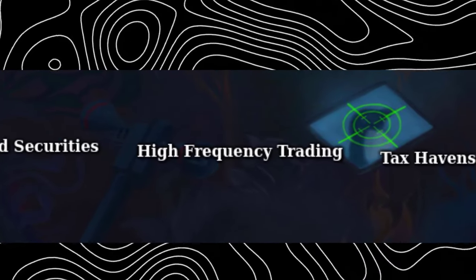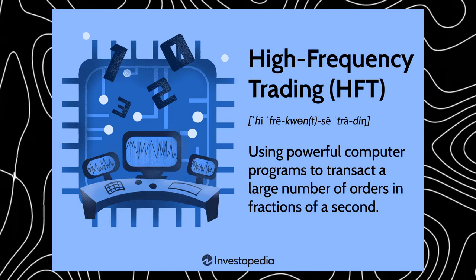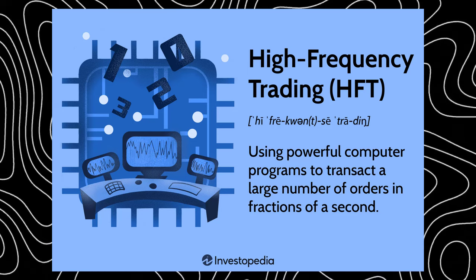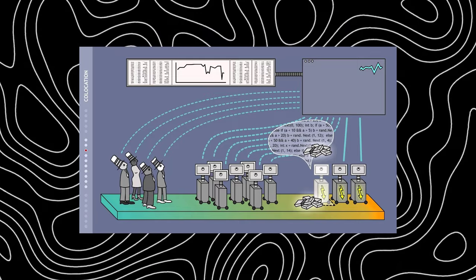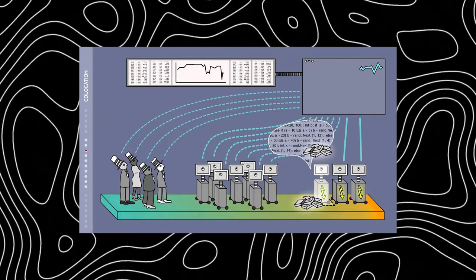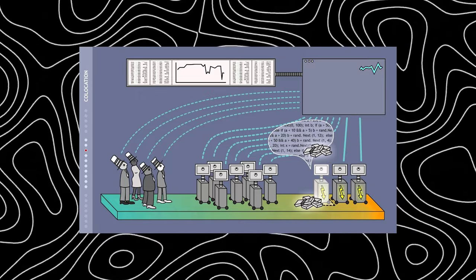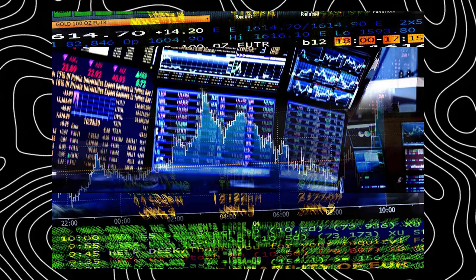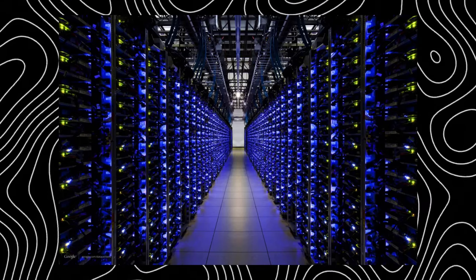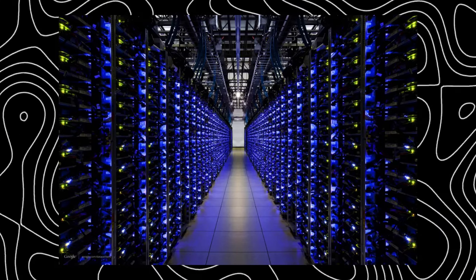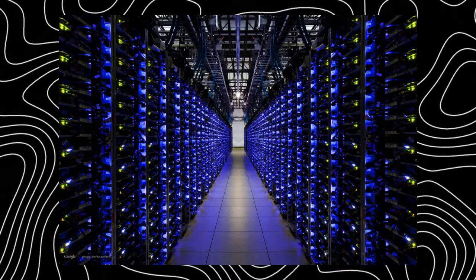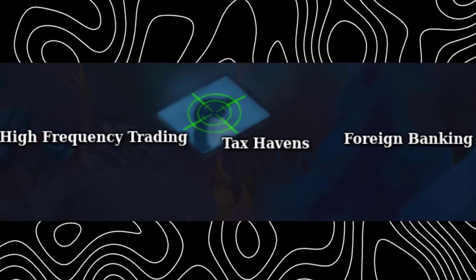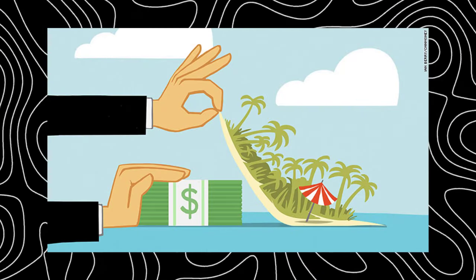High-frequency trading: the modern way of trading, far beyond the scenes of brokers yelling 'buy' and 'sell' on the stock floor. High-frequency trading uses automated algorithms run by large computer systems that execute enormous numbers of orders at lightning speeds. At this scale, it can significantly influence market prices and liquidity. While many beginning traders start off manually trading, larger firms use automated processes. It's a controversial practice, but its efficiency is undeniable — what once took hours or days can now be completed in seconds.